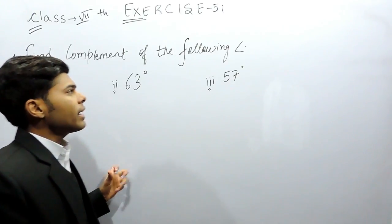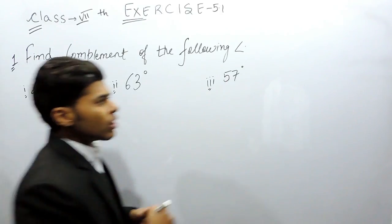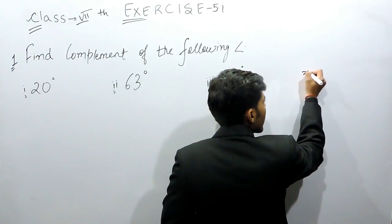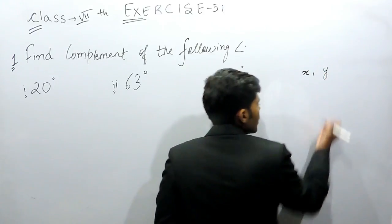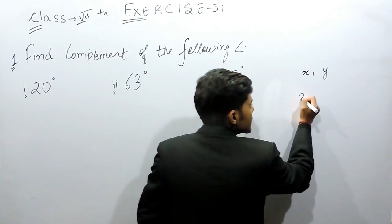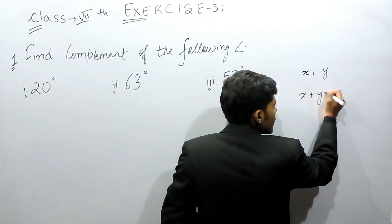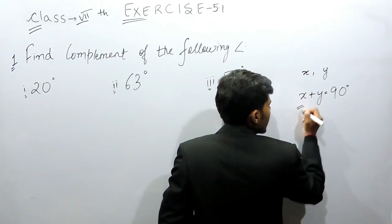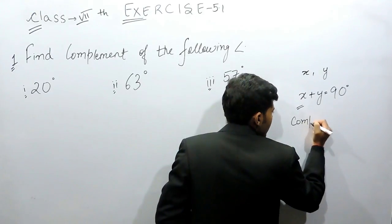So what are complementary angles? Basically, these are those angles—suppose there are two angles x and y. If they are complementary, that means their sum should be equal to 90 degrees. So this is the condition for complementary angles.